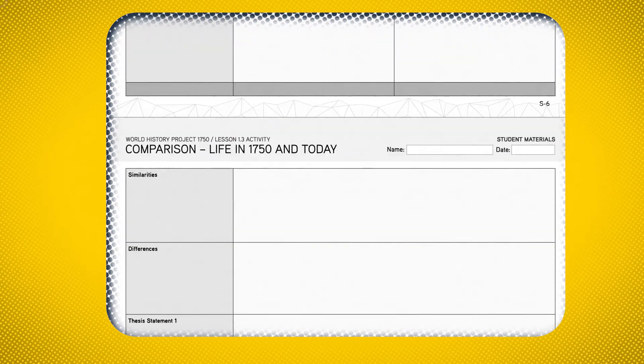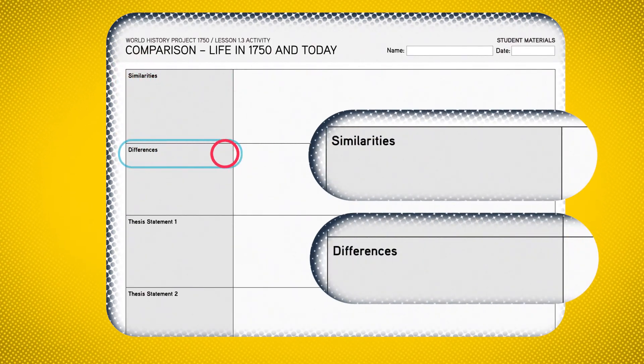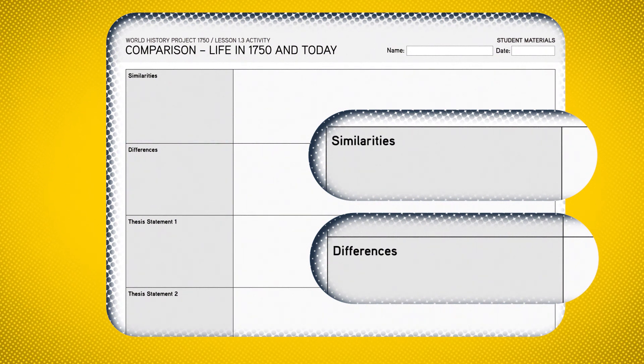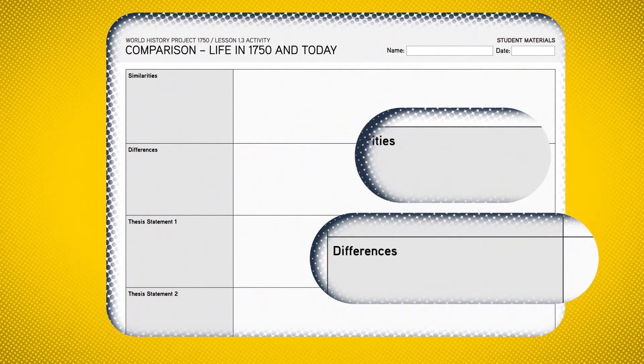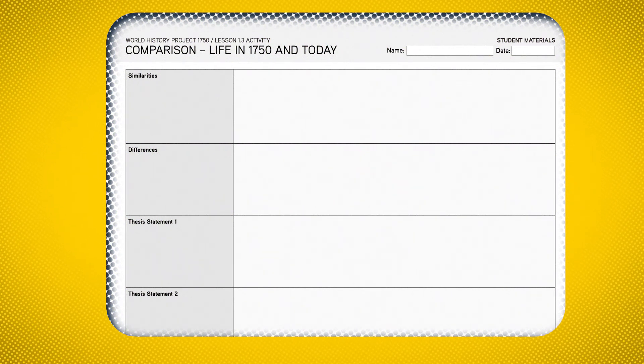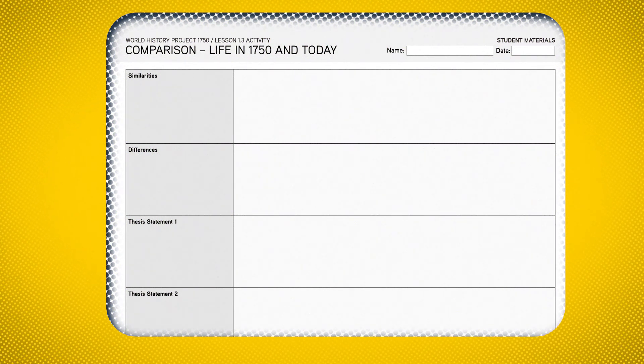Next, discuss the following questions with your students: How are these cases similar? How are they different? What's important about those similarities and differences? Then ask them to write their responses into the similarities and differences rows of the worksheet. Eventually they'll do this step on their own and won't need your guidance.